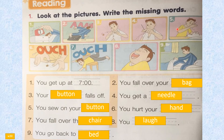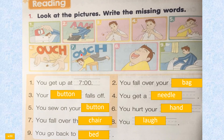Number five: you sew on your button. Number six: you hurt your hand. Number seven: you fall over the chair. Number eight: you laugh. And number nine: you go back to bed.